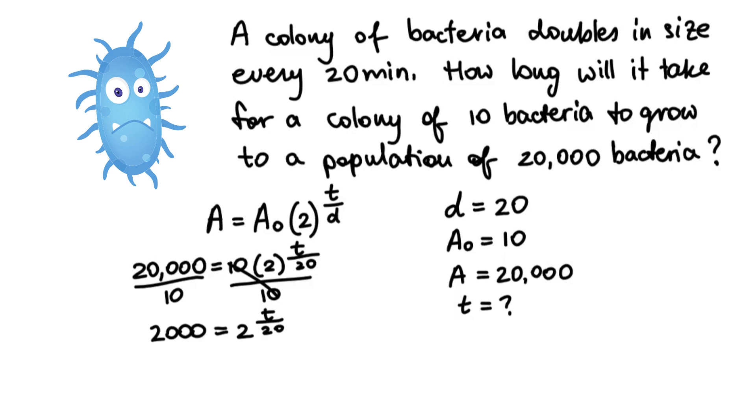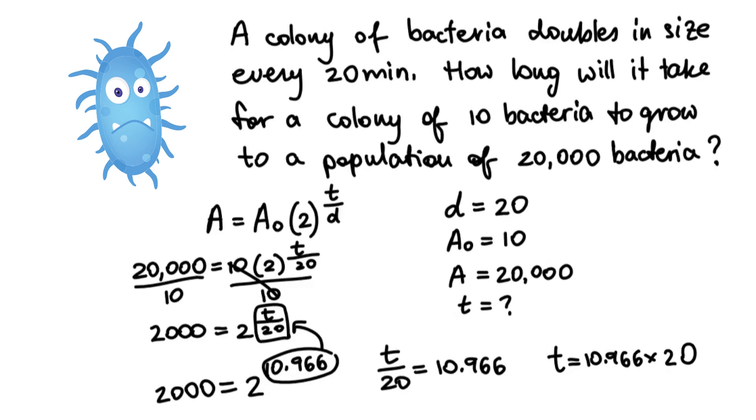The exponent is 10.966. So I can say that 2 to the power of 10.966 is equal to 2,000, approximately. And then this value represents all of this expression. Since I have found a value that gives me approximately 2,000, I can now just take the exponents and solve for t in terms of the exponents only. So t over 20 is equal to 10.966. Then, from here, t will equal 10.966 times 20.